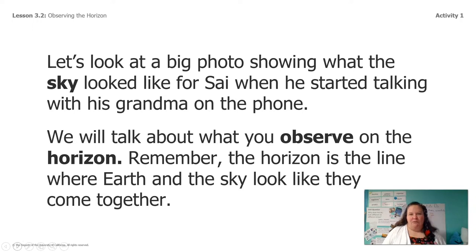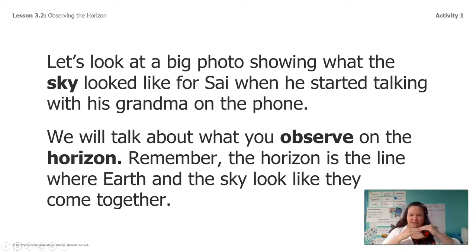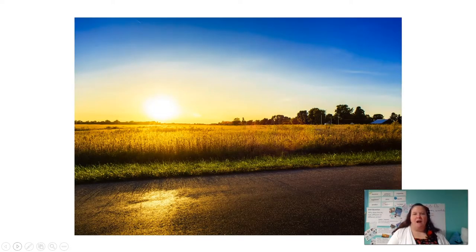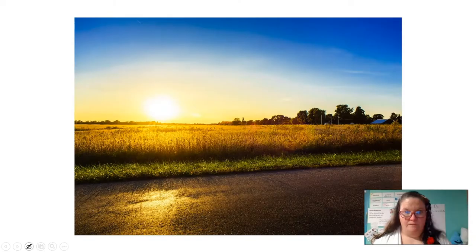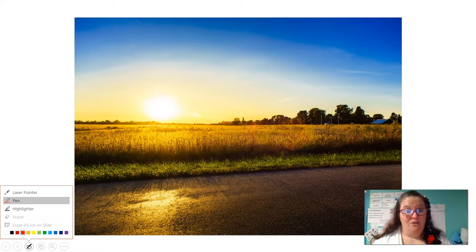So let's look at that big photo that shows what the sky looked like for Sai when he started talking to his grandma on the phone. We'll talk about what you observe on the horizon — that imaginary line where the earth and the sky look like they come together. I put my glasses on and got real close so we can look really carefully and actually outline the horizon in this picture.